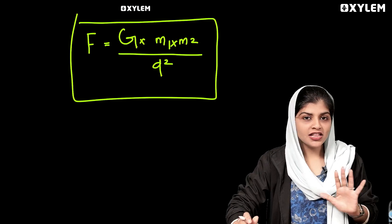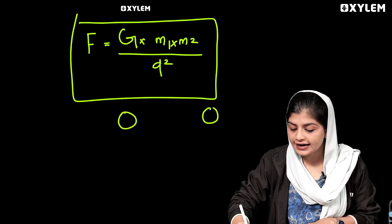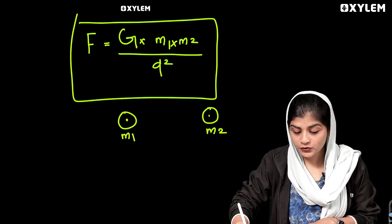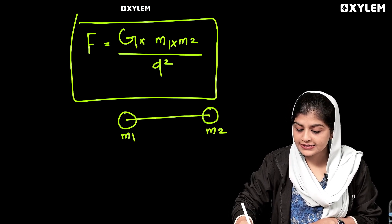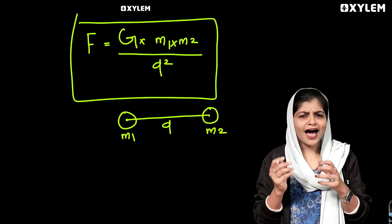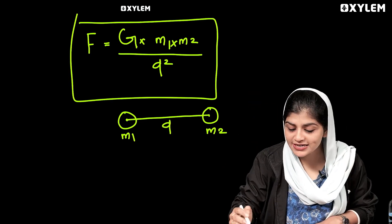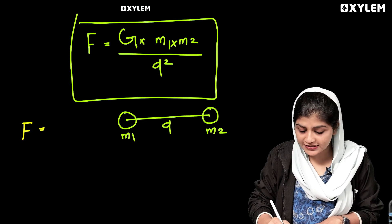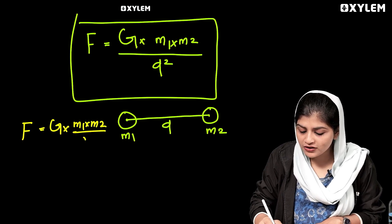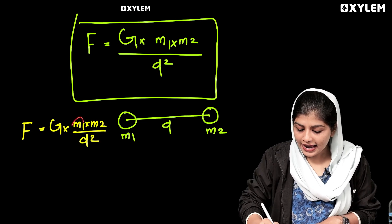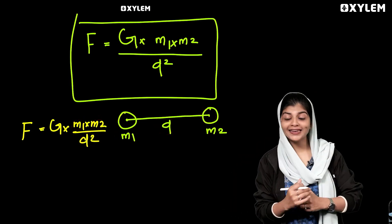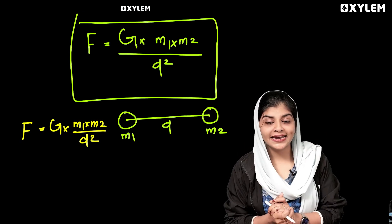D is the value of the distance between the two masses. M1 and M2 are the masses, and D is the distance. So the value of F is equal to G into M1 into M2 divided by D square.